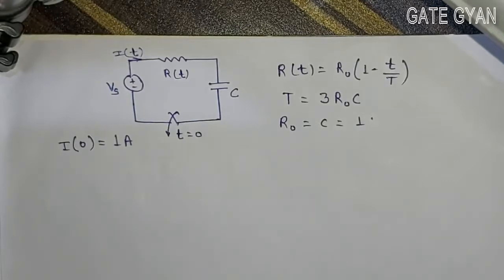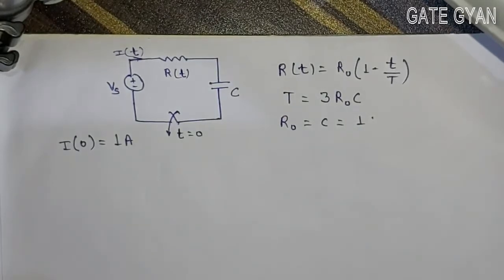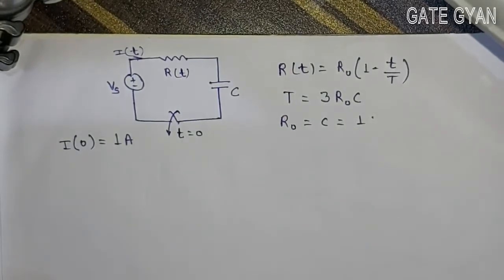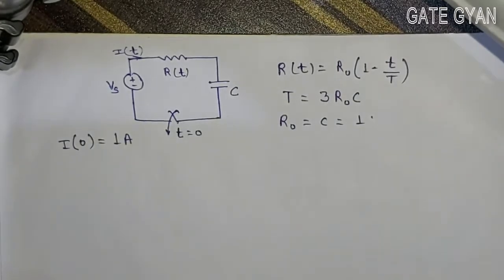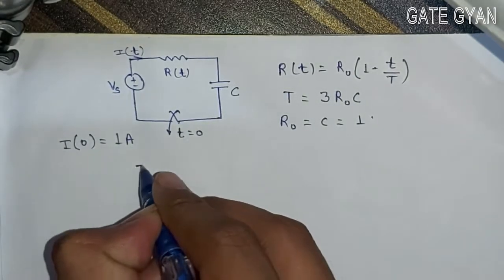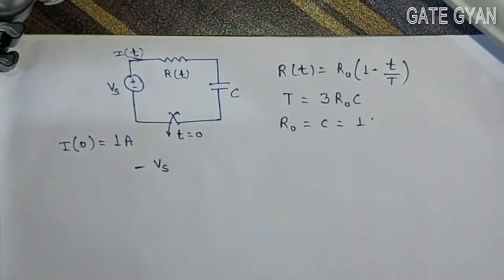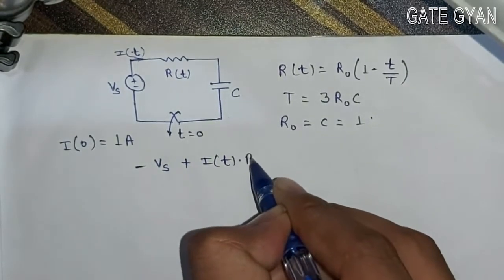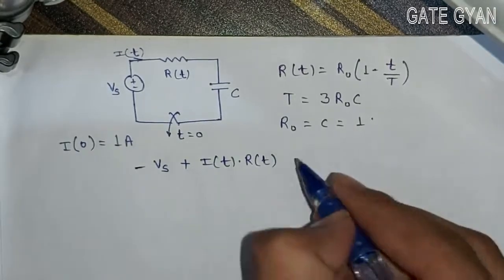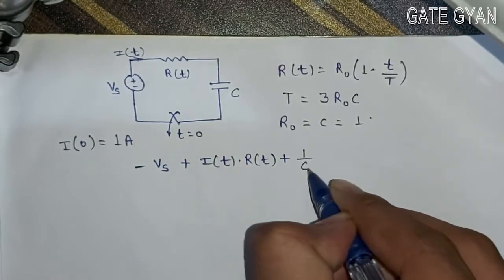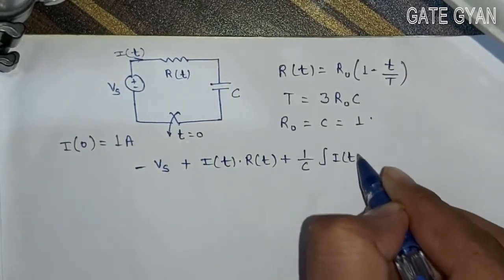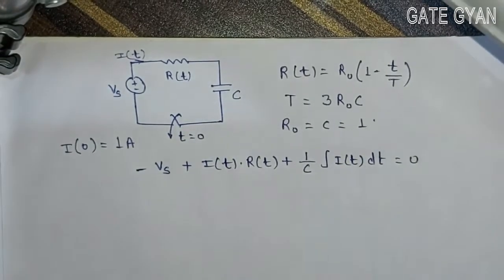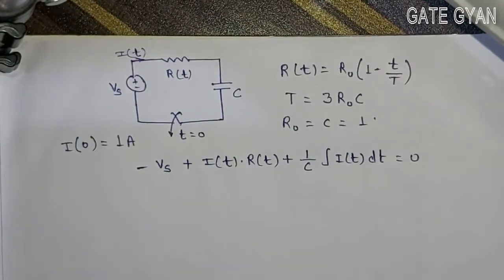This question is important because in normal questions the resistor is not time-varying, so we can simply use Laplace transform to find the values. But here the resistor value depends on time, so we cannot use Laplace. What we can do is write a simple KVL: minus Vs plus current I(T) into R(T) plus voltage across the capacitor, which is (1/C) times the integration of I(T) dt, equals zero.